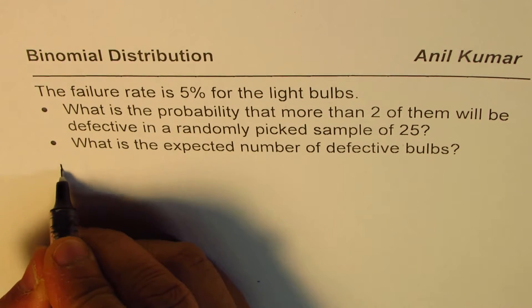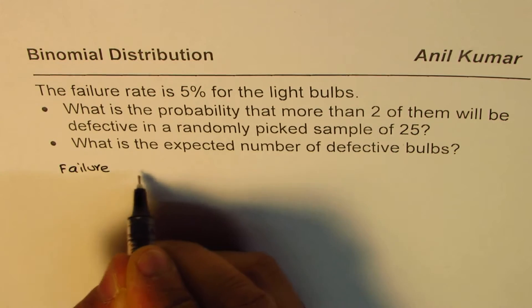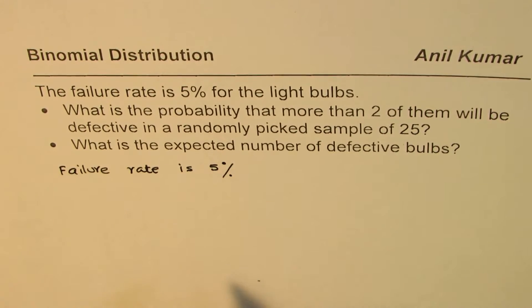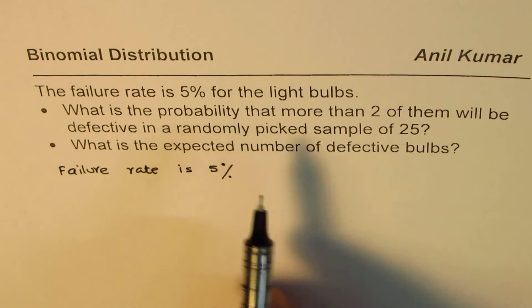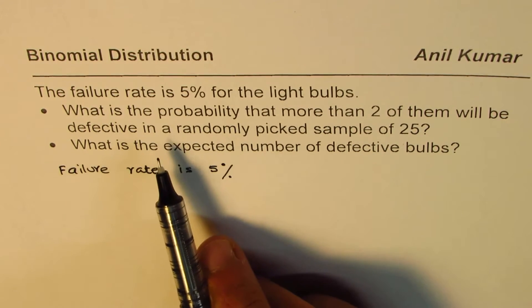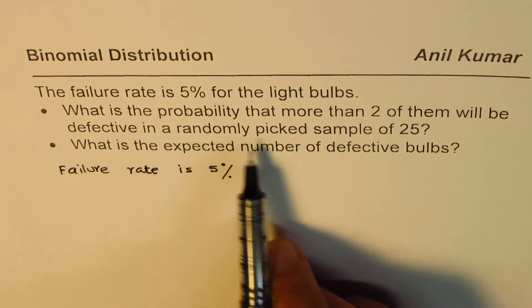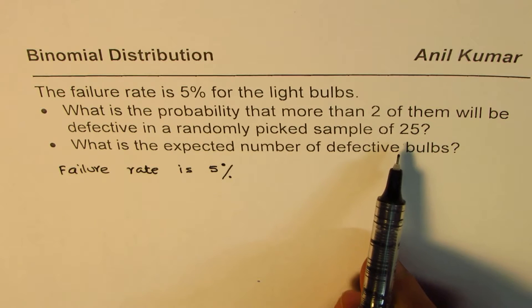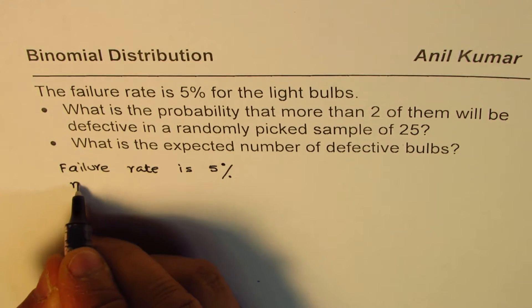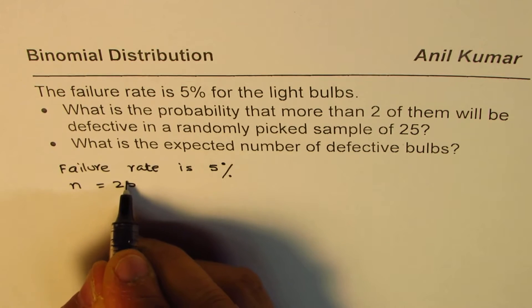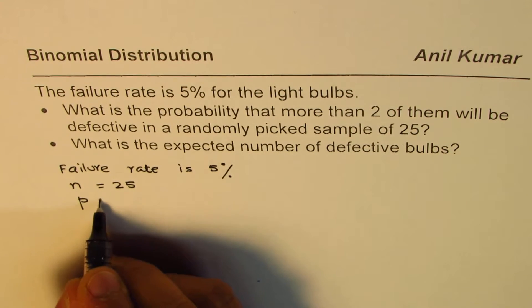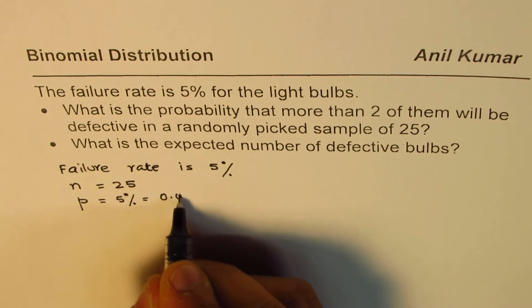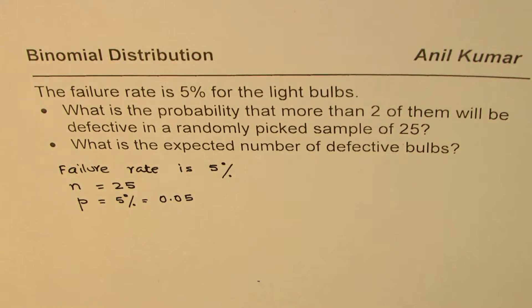We are given the failure rate is 5%. The question is what is the probability that more than two of them will be defective in a randomly picked sample of 25? The total number of pieces is 25, so n equals 25. The probability of success here is defective, which is 5% or 0.05. We define a random variable which is the number of